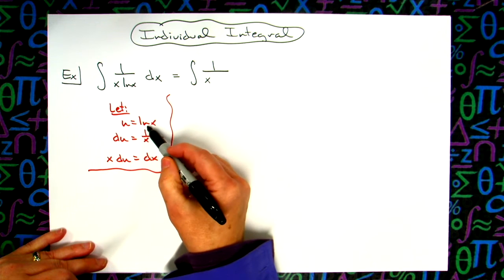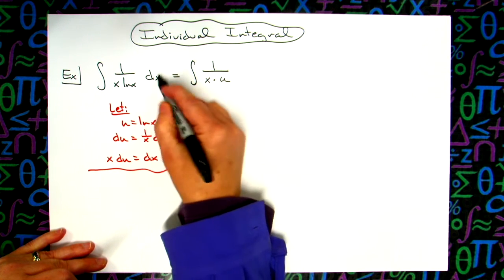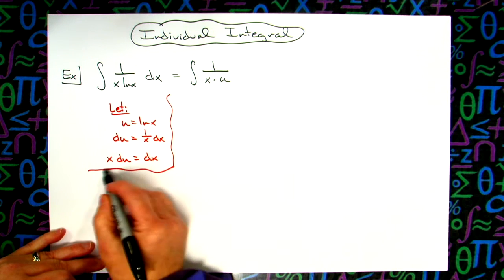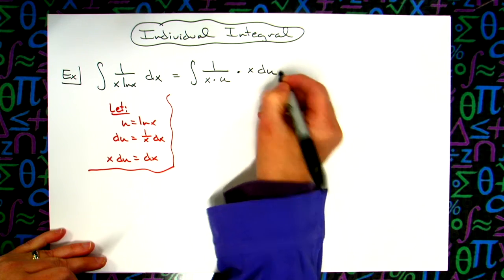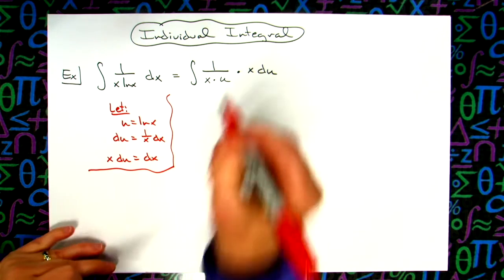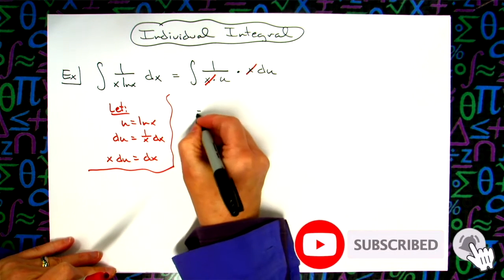Alright, natural log of x, we said was u, so I will replace that with u. And then dx, we have solved for, and that is equivalent to x du. What that's going to allow us to do then is to cross out all of the x's and we will then have an integral in terms of u.